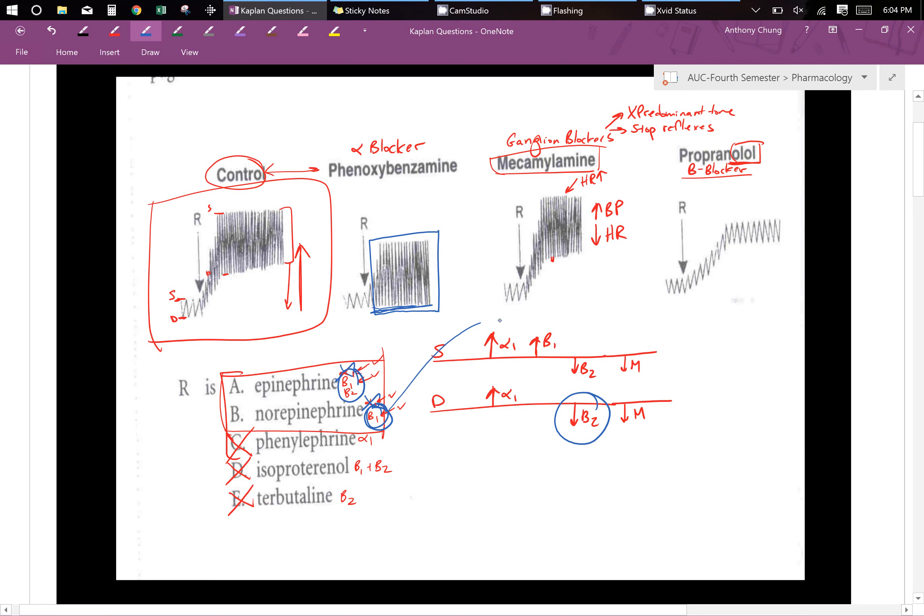Remember beta 1 will only increase your systolic. It would mean that phenoxybenzamine tells you that this thing is actually norepinephrine. So this is norepinephrine.